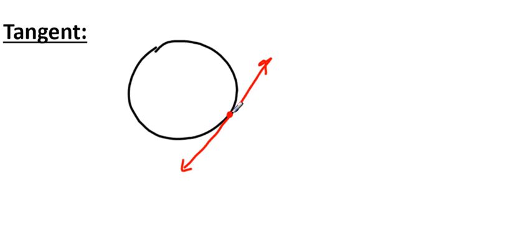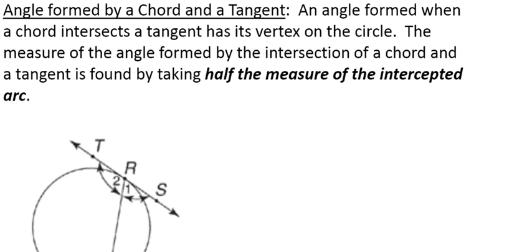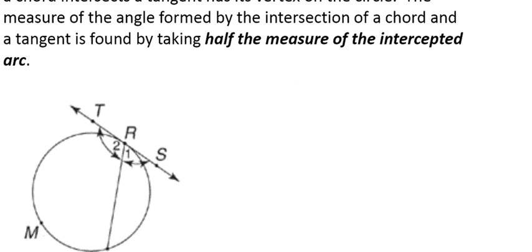The next segment we're going to talk about is the tangent. A tangent is either a line or part of a line that intersects a circle at exactly one point. The next type of angle we need to look at is the angle formed by a chord and a tangent, which has its vertex on the circle. Line TS would be tangent because it touches the circle at exactly one point, and QR would be a chord because its endpoints are on the circle. The degree measure of that angle is found by taking half the measure of the intercepted arc.